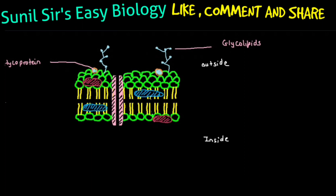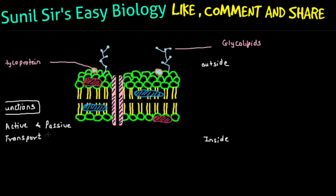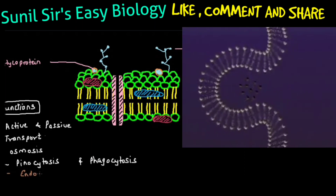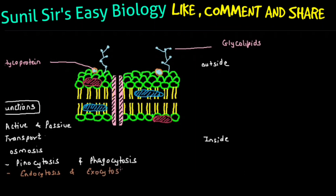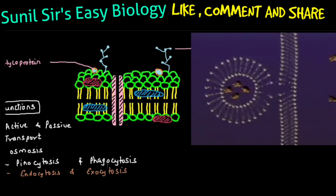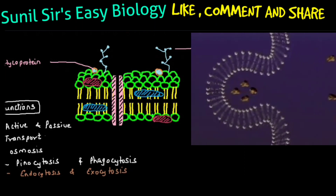The functions of the cell membrane: First, it helps in transportation of substances — either active transport or passive transport. Active transport requires energy, and passive transport requires no energy. Active transport occurs by osmosis, and passive transport is by diffusion. The cell membrane also shows pinocytosis — engulfment of liquid material — and phagocytosis — engulfment of solid material. It shows endocytosis and exocytosis, where the lipid bilayer forms a vesicle, engulfs a particle, and vesicles fuse with the membrane to throw waste out.